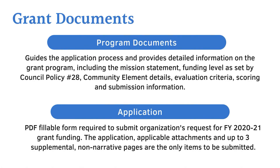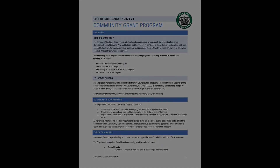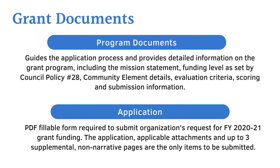The program documents also contain the eligibility requirements for community grants. To be eligible for funding, organizations must be based in and/or benefit Coronado residents. They must be a registered nonprofit and contribute to at least one of the community elements: economic development, social services, community pride, sense of place, or arts and culture. The Council recognizes five types of grants. The program document includes a list of each one, as well as a description and any restrictions on the use of funds.